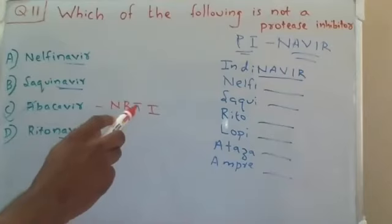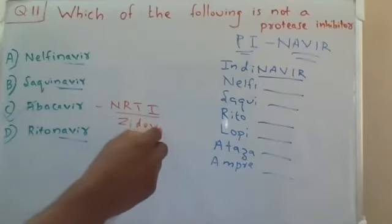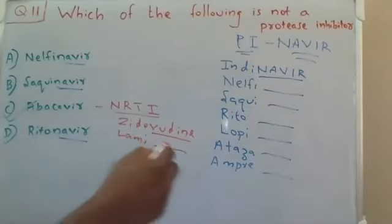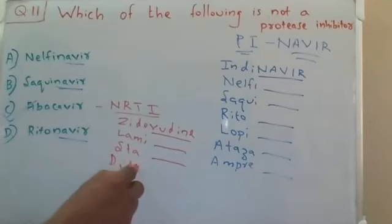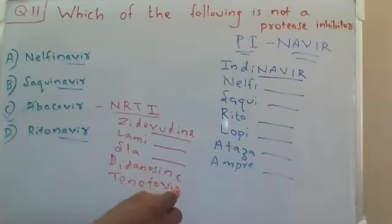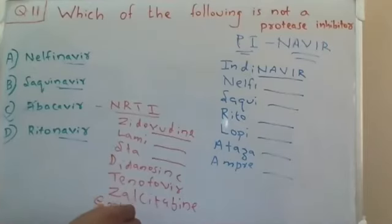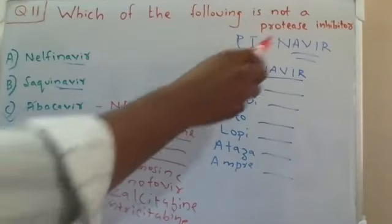Other examples of NRTI drugs include zidovudine, stavudine, lamivudine, didanosine, tenofovir, zalcitabine, and emtricitabine. All these drugs belong to the NRTI category. Abacavir is also an NRTI drug, whereas the '-navir' drugs belong to the protease inhibitor category.